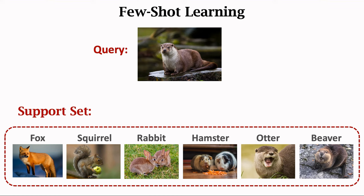Support set is a meta-learning term. The small set of labeled images is called the support set. Notice the difference between training set and support set. The training set is big — every class has many samples, enough for learning a deep neural network. In contrast, the support set is small: every class has at most a few samples. In this example, every class has only one sample. It is impossible to train a deep neural network on such a small set. The support set can only provide additional information at test time.